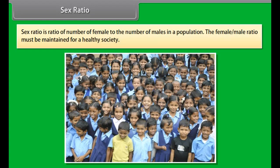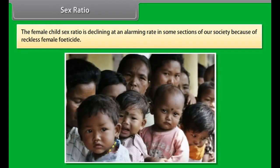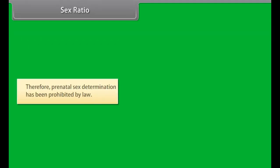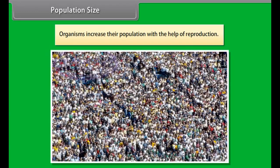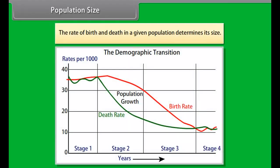In surgical methods, a small portion of the vas deferens in the male is removed or tied — this is known as vasectomy — so that sperm transfer is prevented. In females, the fallopian tube is surgically removed or tied — known as tubectomy — so that the egg will not be able to reach the uterus and fertilization will not take place.